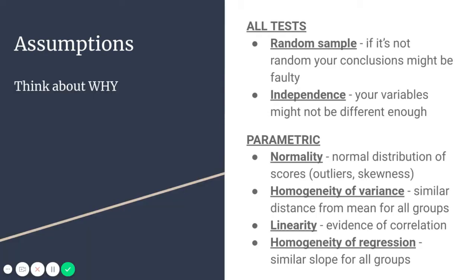For assumptions testing, all of these tests go on the assumption that you are working with a random sample, and if it's not random, your conclusions might be faulty. For example, if you think you have a random sample of children measuring IQ, but that class happens to be the gifted children separated from everyone else, your conclusions will be wrong. Also, all tests assume that your variables are different enough and independent of one another — if you're trying to measure depression and sadness, those variables are not different enough and you'll likely have faulty conclusions.